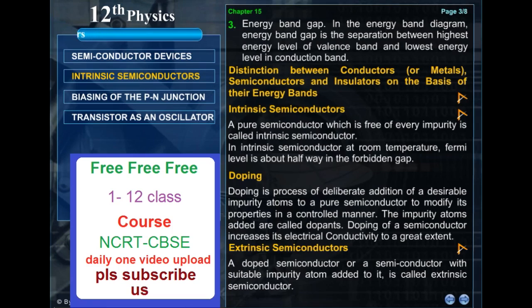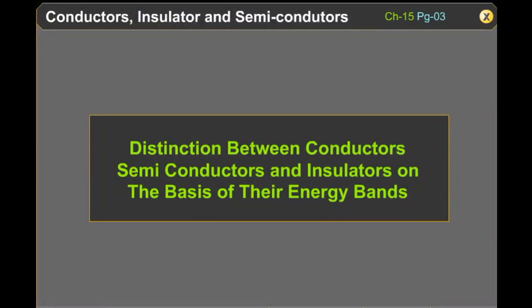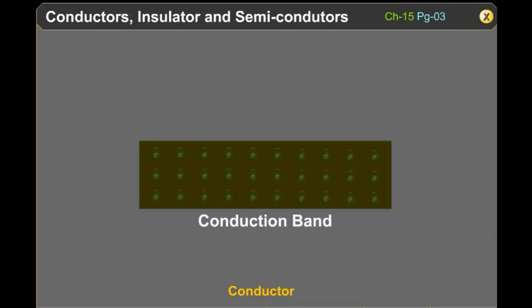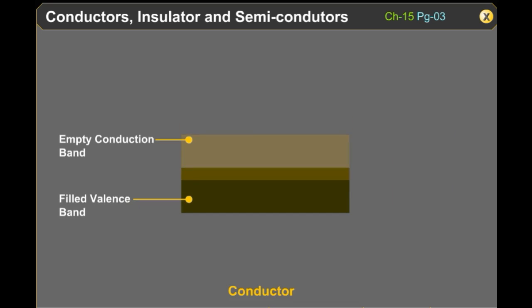Distinction between conductors or metals, semiconductors and insulators on the basis of their energy bands. In conductors, either the conduction band is partially filled with electrons, or the conduction band and valence band partly overlap each other. That is, there is no forbidden energy band gap between these two bands. Thus, the electrons are moving freely and conducting charge.